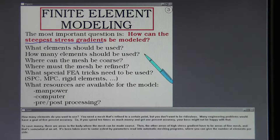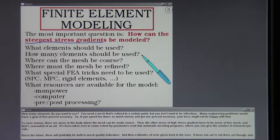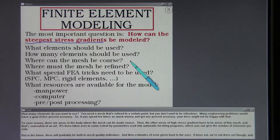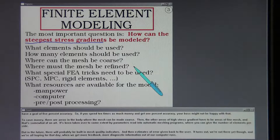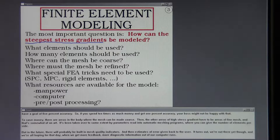Many engineering problems would have a goal of 5% accuracy. So if you spend 10 times as much money and get 1% accuracy, your boss might not be happy with that. To save money, there are areas in the body where the mesh can be made coarse. Then the other areas of high stress gradient have to be areas of fine mesh. And that's somewhat of an art.